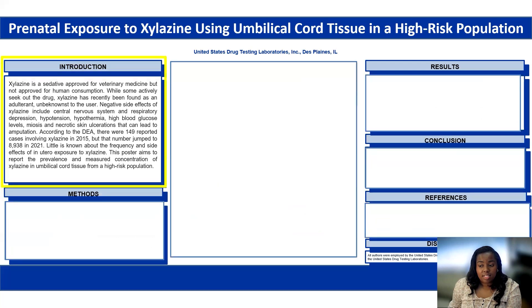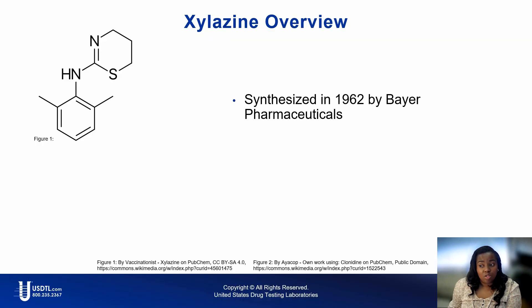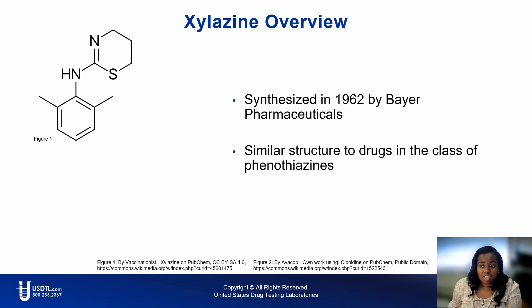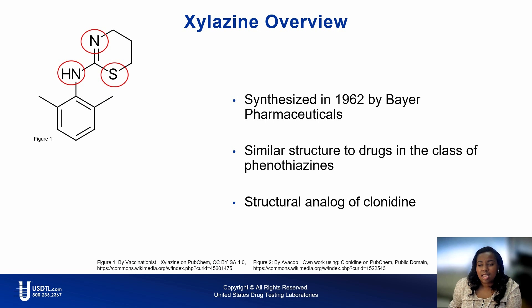What is xylazine? Xylazine is a sedative approved for veterinary medicine. Xylazine is an alpha-2 adrenergic agonist, initially synthesized in 1962 by Bayer Pharmaceuticals during a targeted effort to discover an antihypertensive agent. Structurally, xylazine is similar to phenylthiazine, a class of compounds containing nitrogen and sulfur widely used in psychopharmacology. Phenylthiazines are considered first-generation antipsychotic medications and are employed to treat various mental and emotional disorders. Xylazine is also a structural analog of clonidine, a drug discovered around the same time period.